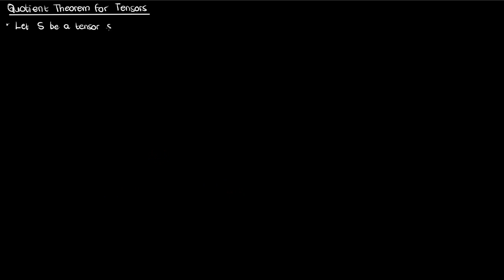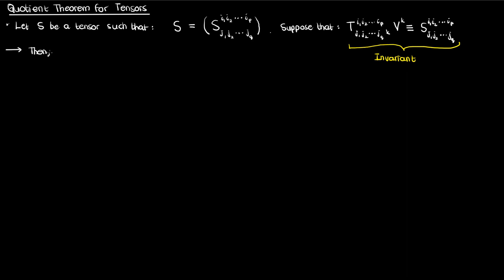Suppose I had a tensor S of contravariant rank P, so P indices in the superscript, and covariant rank Q, so Q indices in the subscript. Suppose that this tensor S was created from the inner product of some entity T and some vector V with a single contravariant index K. This equation is invariant, it doesn't change if you transform the coordinate system. If these statements were true, then the quotient theorem states that the array T is also a tensor with a contravariant rank of P and a covariant rank of Q plus 1. I'm going to prove this theorem in this video.